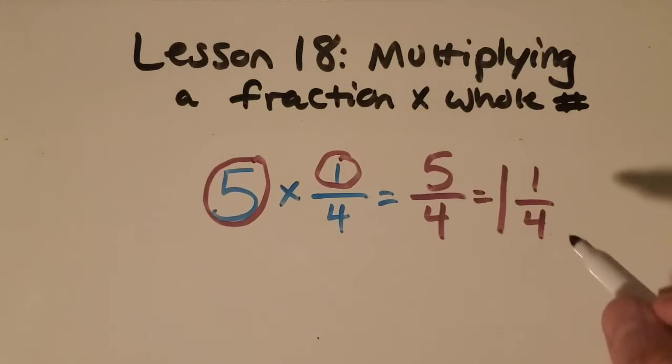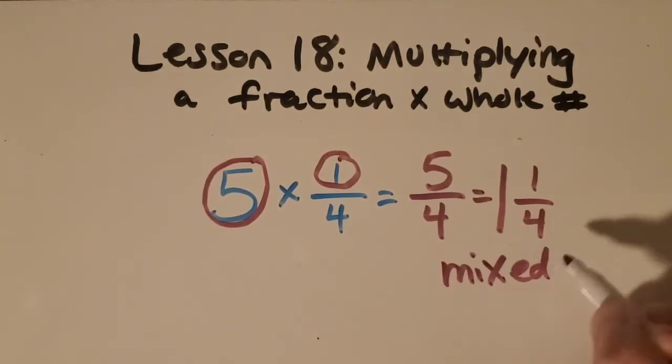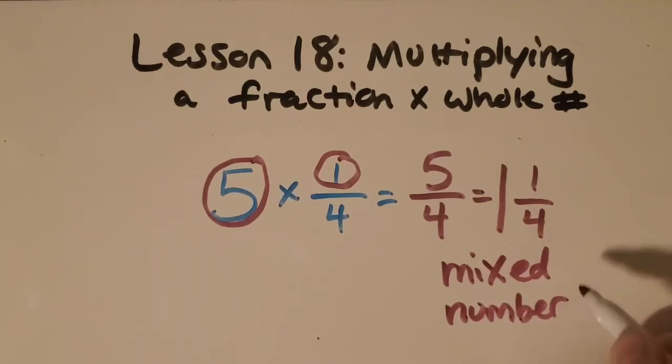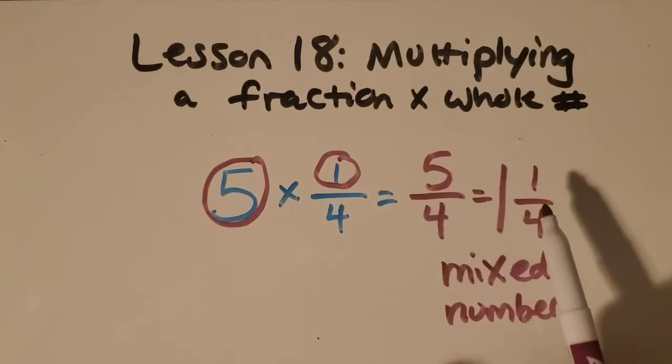So one and one-fourth is the answer. And that is called a mixed number when we have a whole number and a fraction. So this is an improper fraction. This is a mixed number.